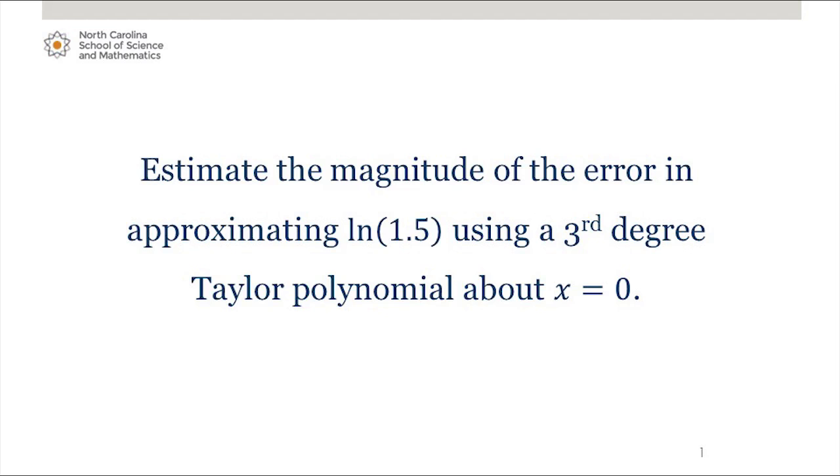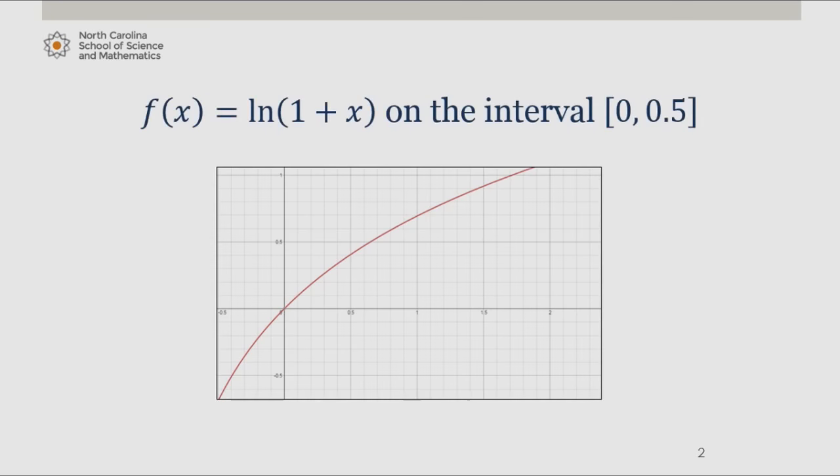To do this, let's consider the function natural log of 1 plus x on the interval from 0 to 0.5. Since we're using the Taylor polynomial centered about x equals 0, and we're approximating the value of natural log of 1 plus 0.5.